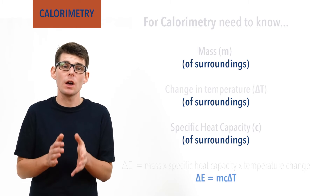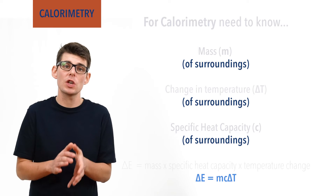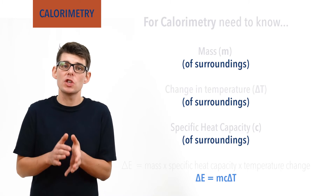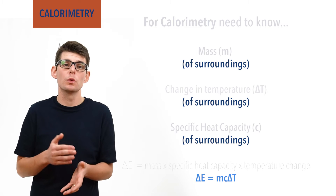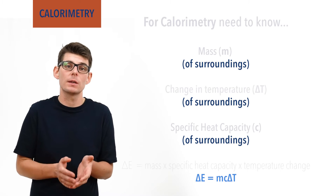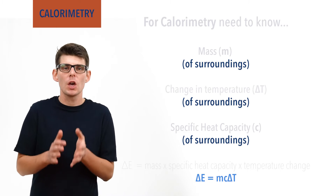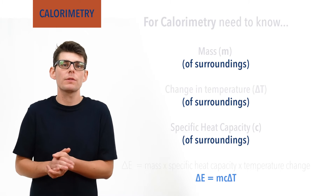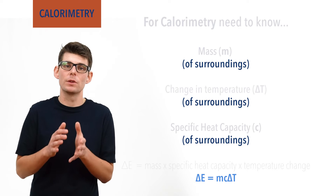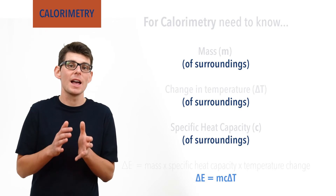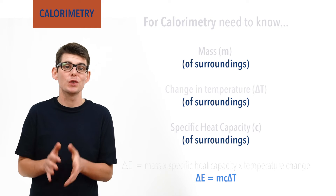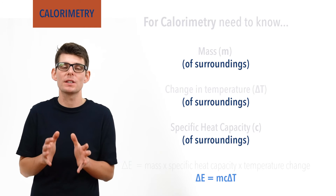This equation is only being used to measure the energy change of the reaction's surroundings. The energy change calculated may be in joules or kilojoules, depending on the units of specific heat capacity used. A common area of confusion and lost marks for students is that they use the mass of the reactants as the mass in this equation, rather than the mass of surroundings. Don't fall into that trap.